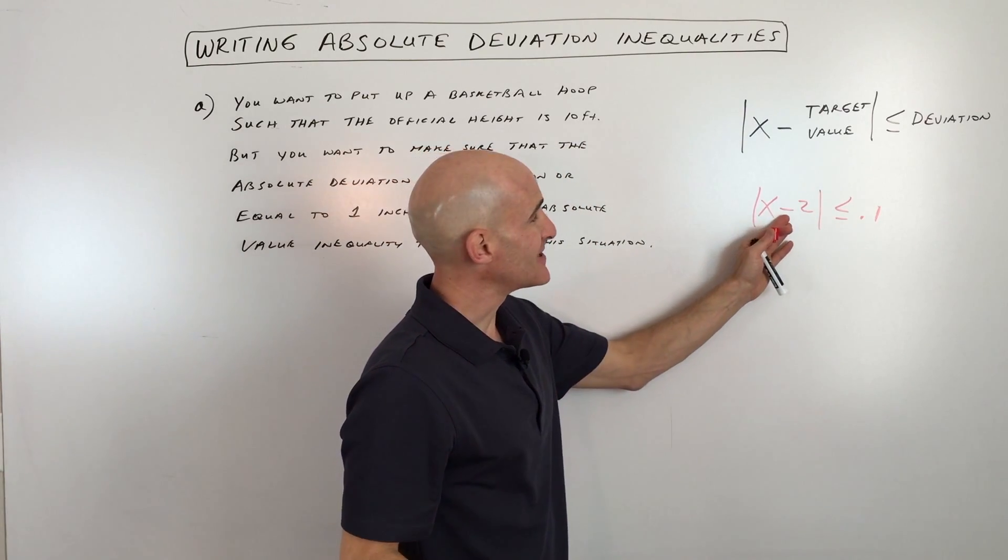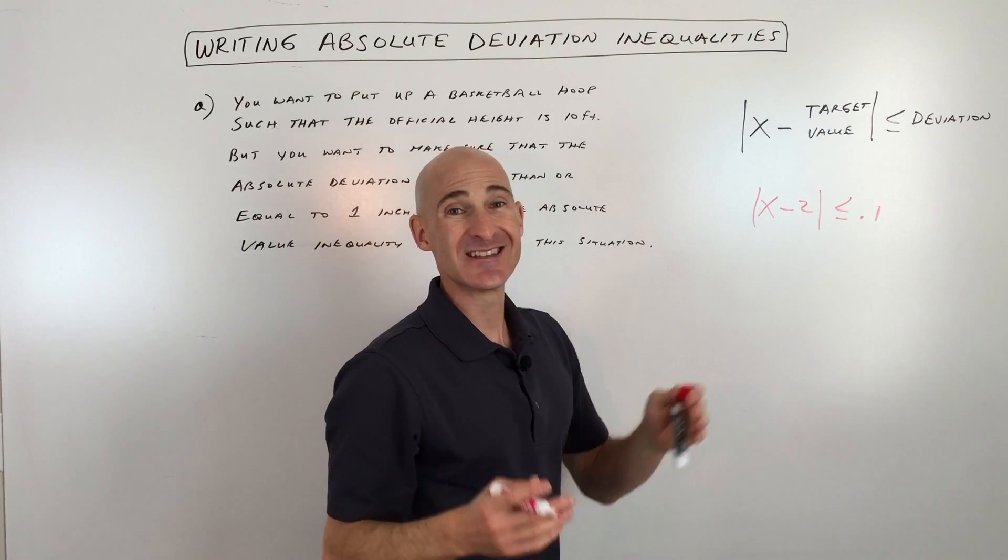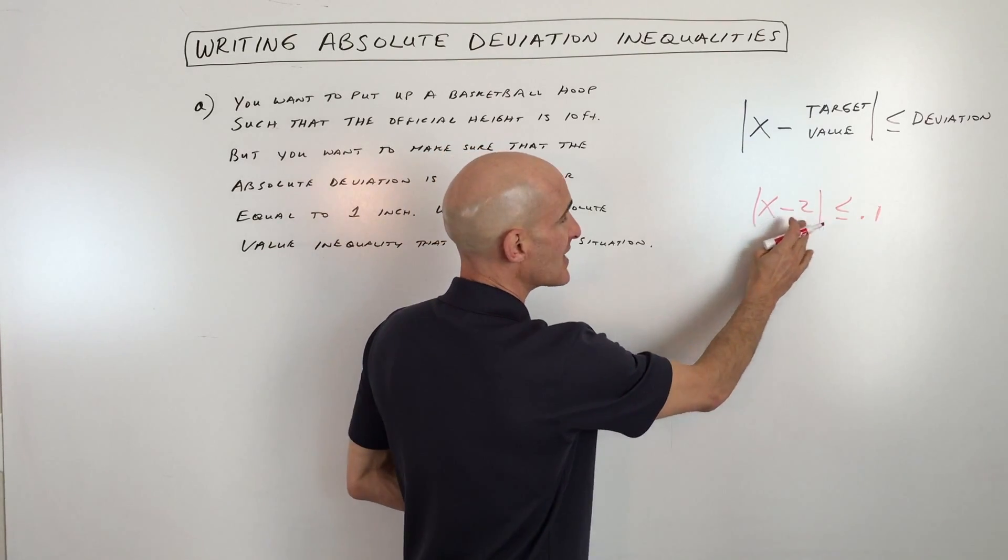So when you think about this, minus means the difference, but in geometry that means the distance. So it's a distance between some number X and two.